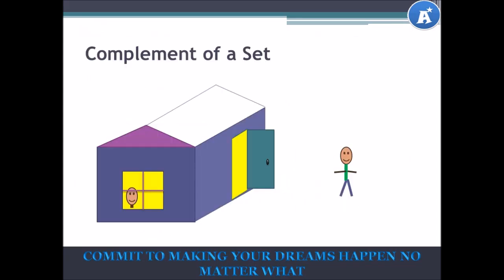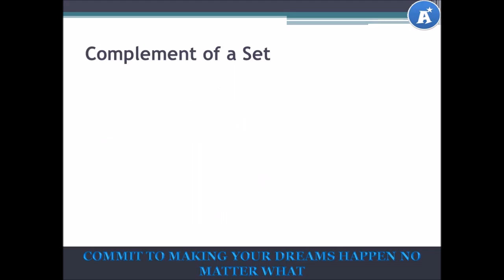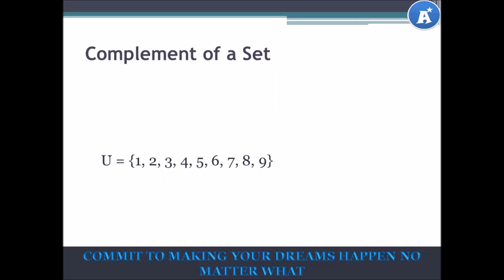Let's look at what we call the complement of a set. The complement of a set, which is usually denoted by an apostrophe above the letter of the set, is simply what is outside of the set. For example, if I have the universal set = {1, 2, 3, 4, 5, 6, 7, 8, 9} and X = {1, 2, 3, 6}, then X complement would simply be {4, 5, 7, 8, 9}, because 4, 5, 7, 8, and 9 do not belong to X.